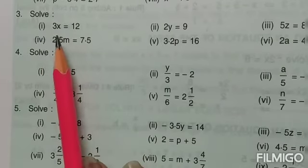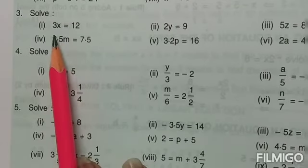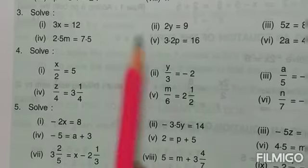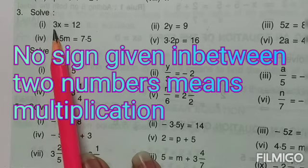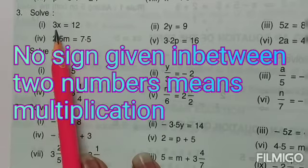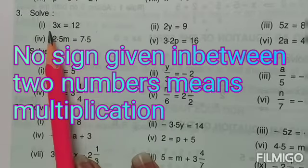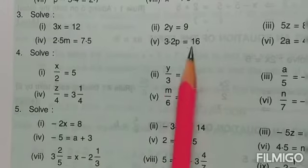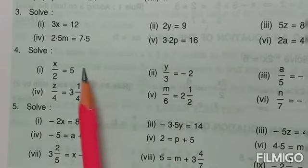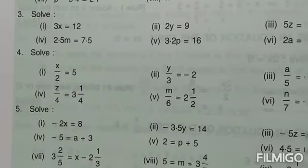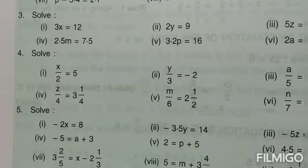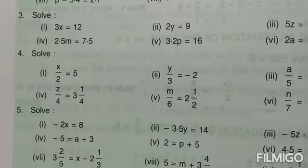It is solved. Now, if you look at the algebraic expression that is given, there is no plus or minus given. So when there is no sign given between the number and the variable, it is understood that there is a multiplication. 3x simply means 3 into x. And 3.2p means 3.2 into p. In questions 3, 4, and 5, we are going to see multiplication and division with a variable.